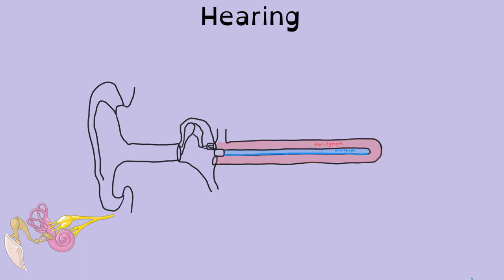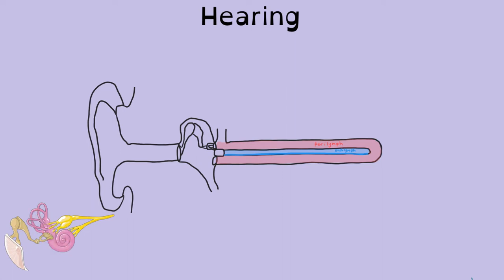To remind you, when we're looking at the structure of the ear, this is the tympanic membrane. Outside will be the auditory canal, which is here. So there's the tympanic membrane shown in my diagram. Here are the three ossicles: the malleus, the incus, and the stapes — or hammer, anvil, and stirrup. And then this pink area is showing you the inner ear. Hearing only takes place in the cochlea, which is this snail shell-like structure.